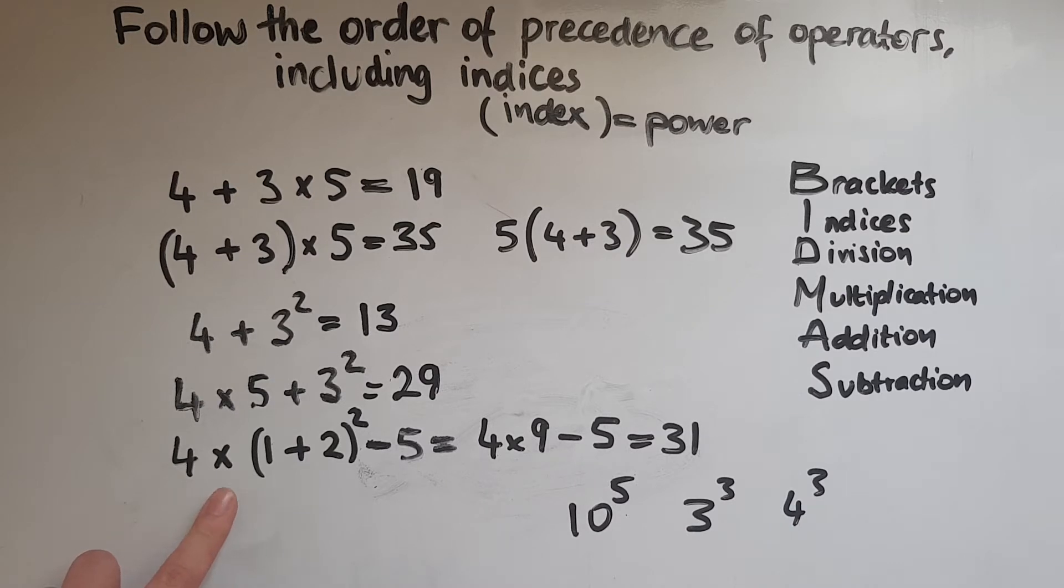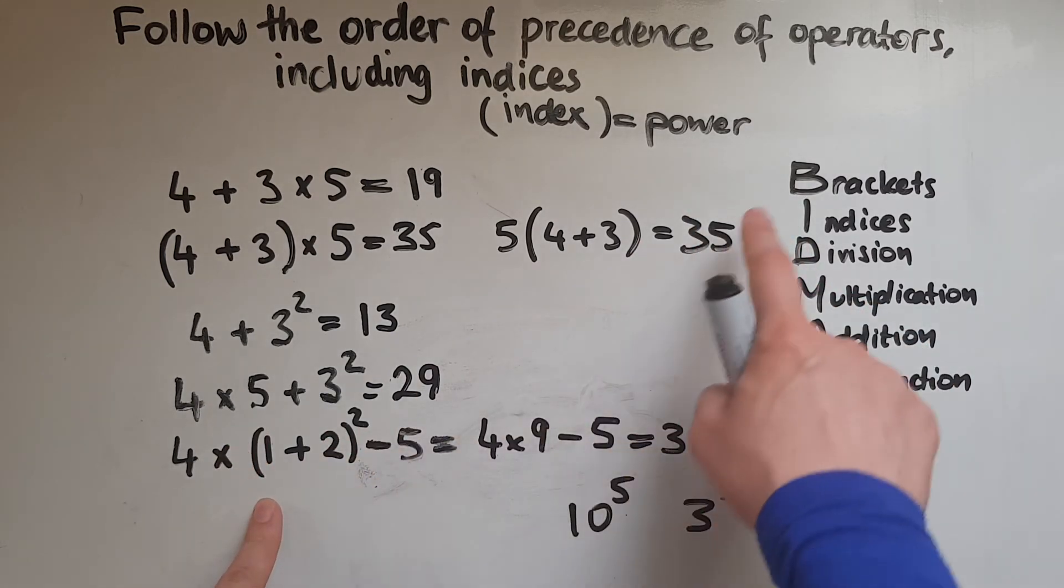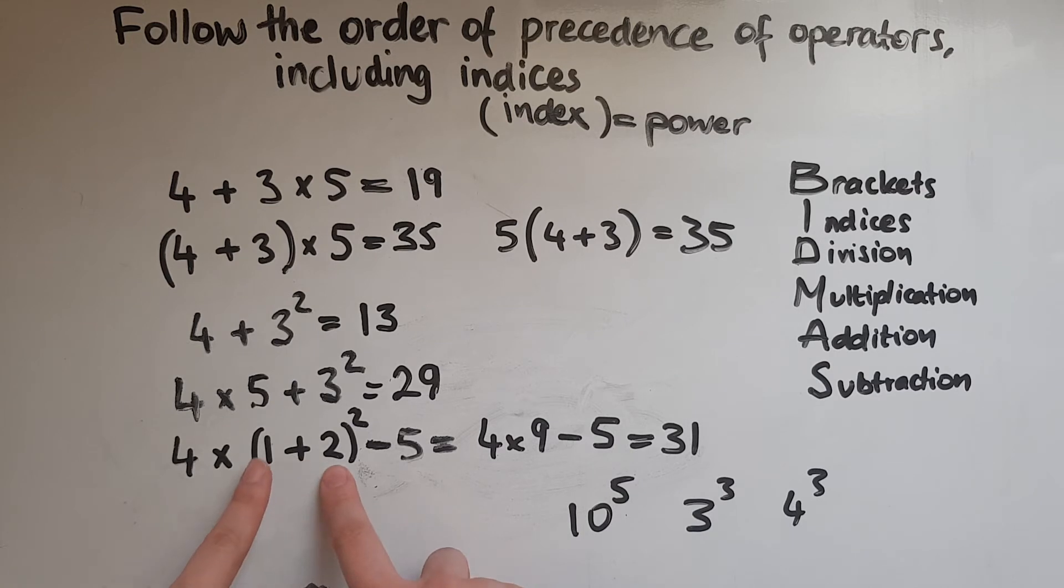And in this one we've got multiplication, addition, squaring which is an index, and subtracting. Brackets come first because we've got brackets as well. Within the brackets, 1 add 2 that gives us 3. And then indices, so that means we're squaring it. 3 squared which gives us 9. So then in between them two, we've got to pick multiplication because that comes first. So we go 4 lots of 9, and then we take away 5. And that's what we did here as well. That gave us 31.